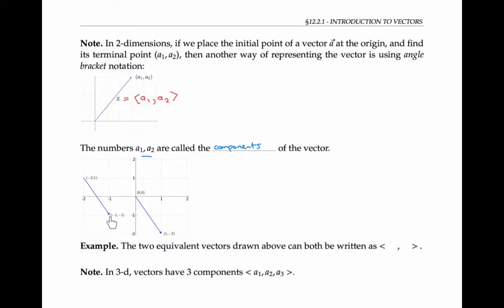In this figure, two equivalent vectors can both be described in angle bracket notation as the vector with components ⟨1, −2⟩, because the version of the vector whose initial point is at the origin has a terminal point with coordinates 1, negative two. We can also talk about vectors in three or more dimensions. In 3D, vectors will have three components.